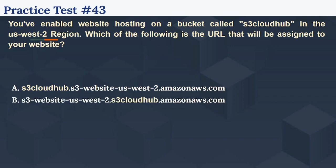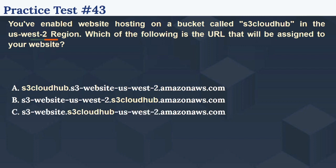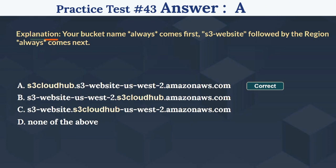Option B: s3-website-us-west-2.s3cloudhub.amazonaws.com. Option C: s3-website.s3cloudhub-us-west-2.amazonaws.com. Option D: None of the above. The right answer is A — S3CloudHub.s3-website-us-west-2.amazonaws.com. Your bucket name always comes first, followed by S3 website and then the region. Let's move to the next question.